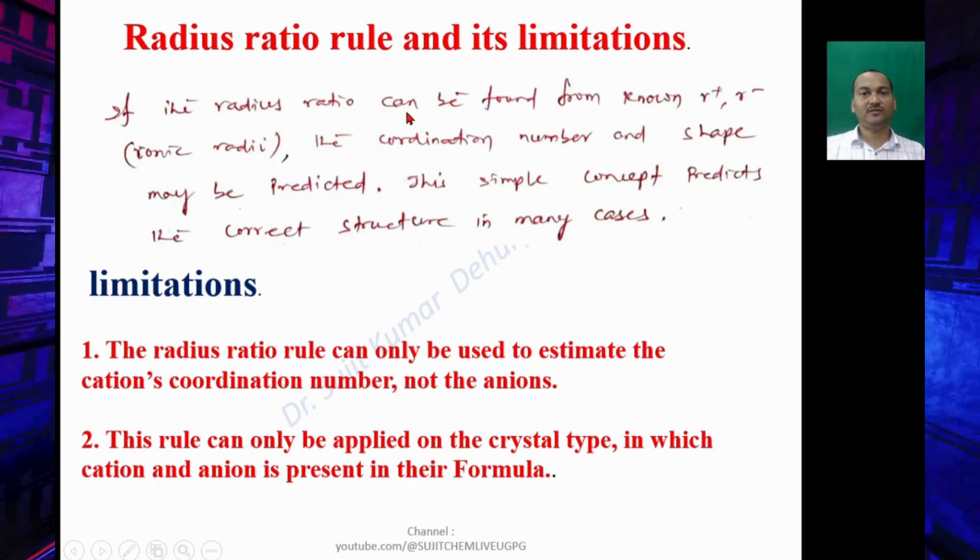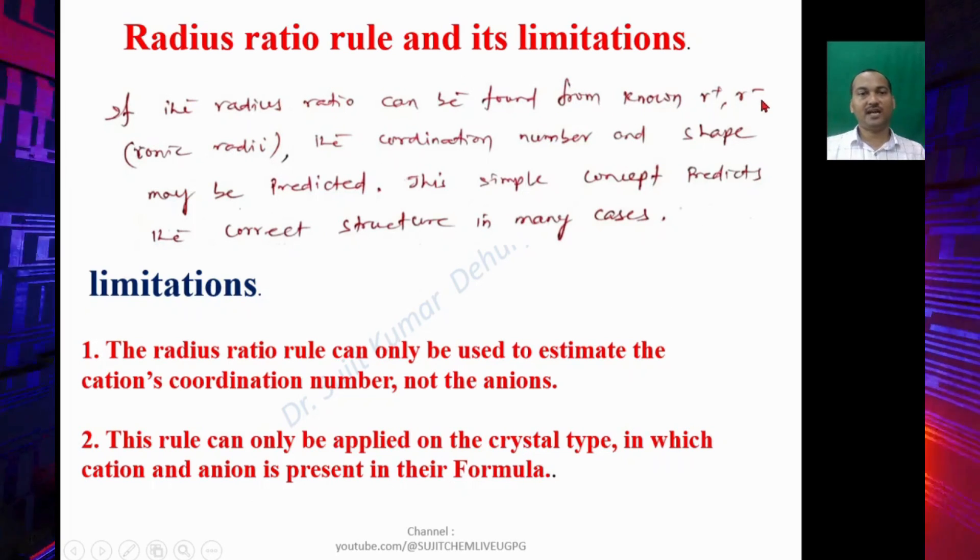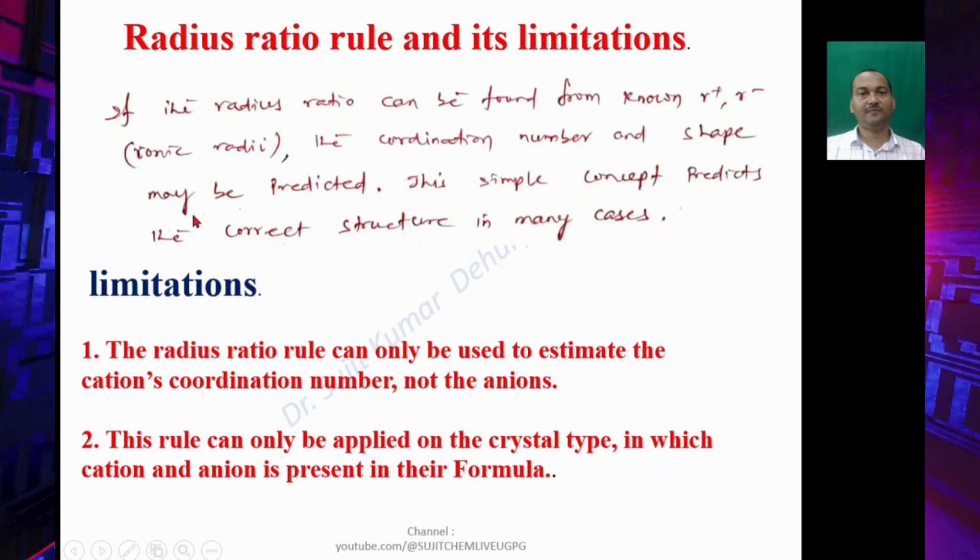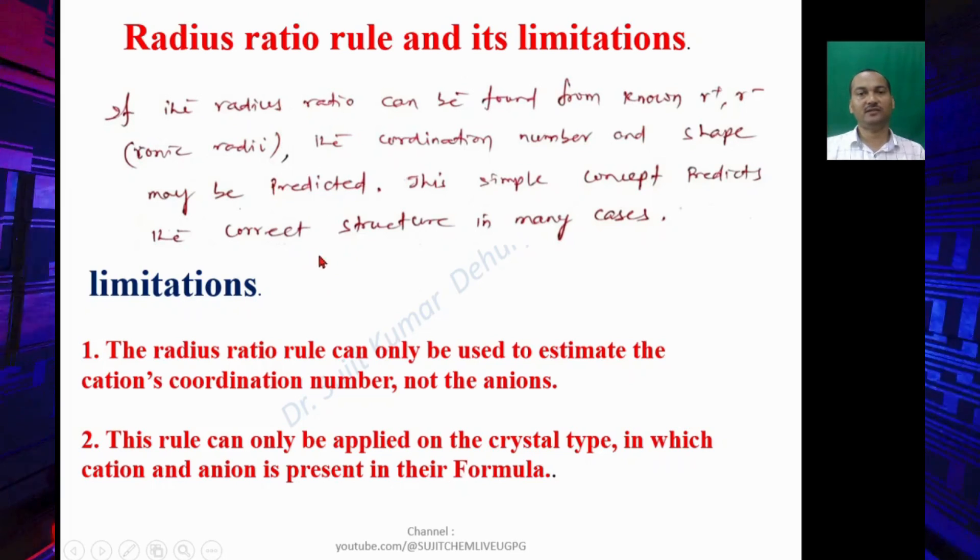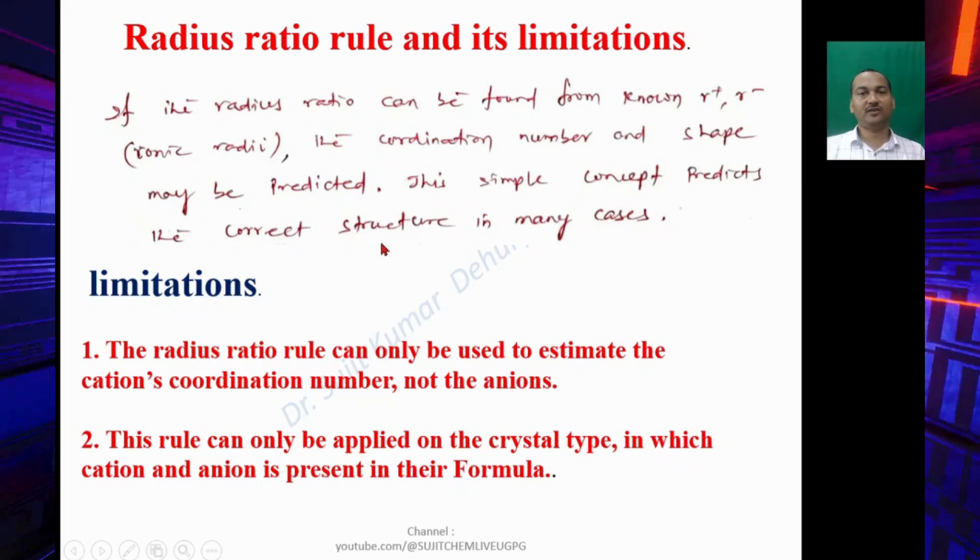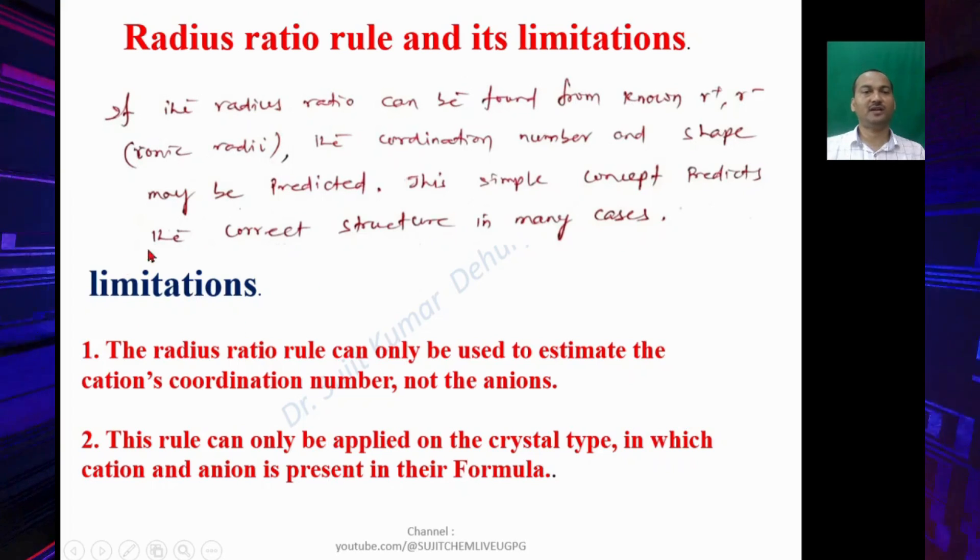So if the radius ratio can be found from R+ and R- (the ionic radii), the coordination number and shape may be predicted. Similarly, you can find out for coordination number 4, coordination number 6, etc. This simple concept predicts the correct structure in many cases. Now let's talk about its limitations.